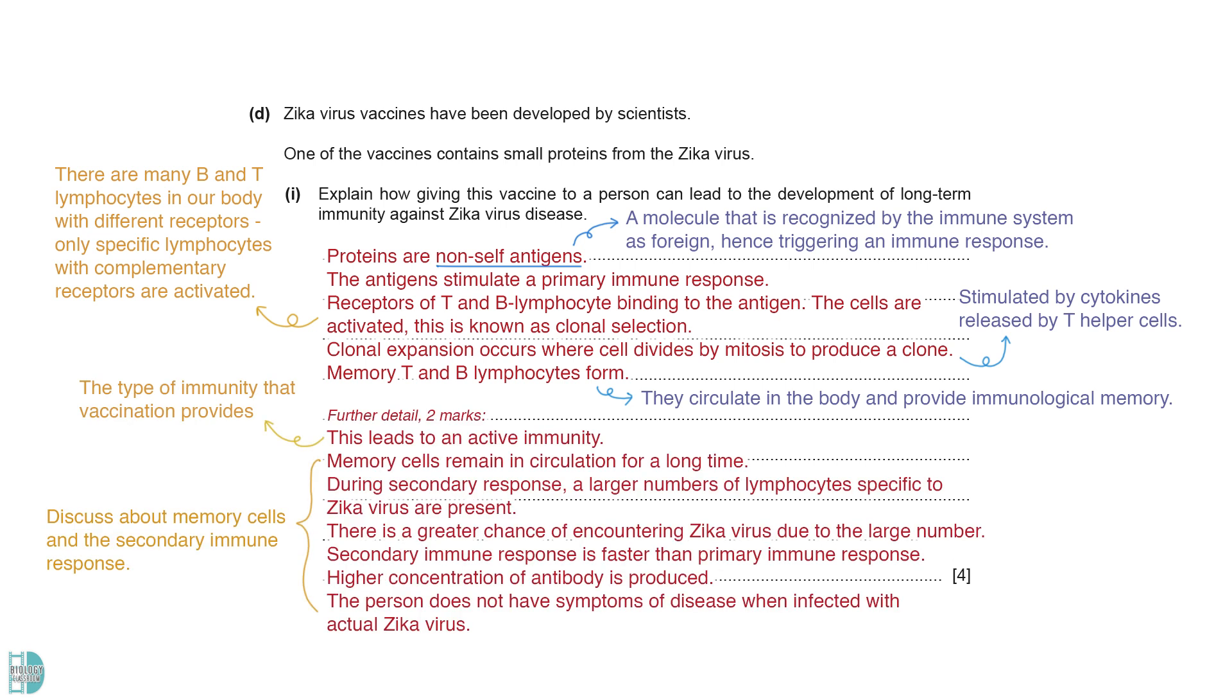Providing any further details can give you two marks. You can state the type of immunity that vaccination provides, or give details on how memory cells can confer long-term immunity. You can also describe how a secondary immune response can help prevent illness during a subsequent encounter.